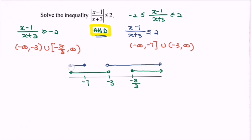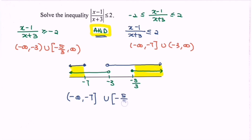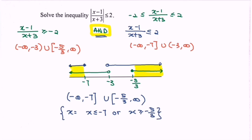The intersecting region gives our final answer in interval form: negative infinity until negative 7, union negative 5 over 3 until infinity. As for the set notation: x less than or equals to negative 7, or x is greater than or equals to negative 5 over 3. That is the answer for the set notation.